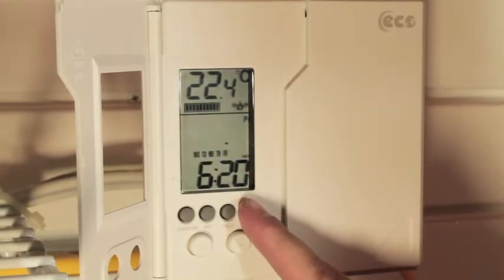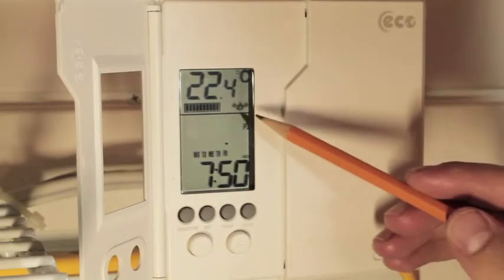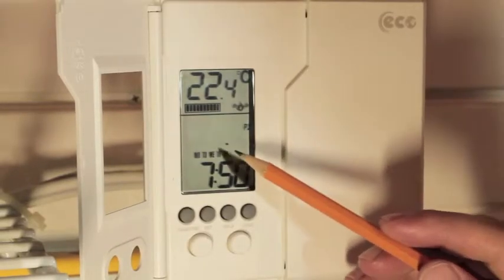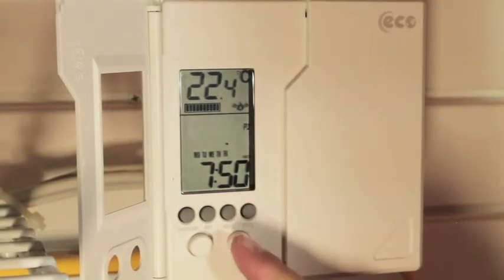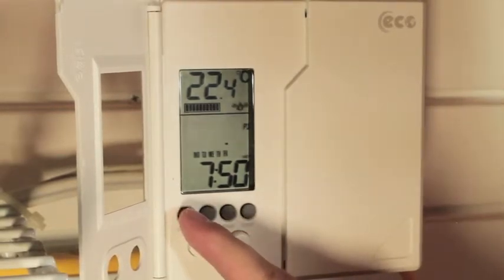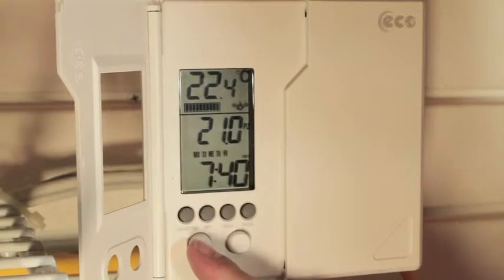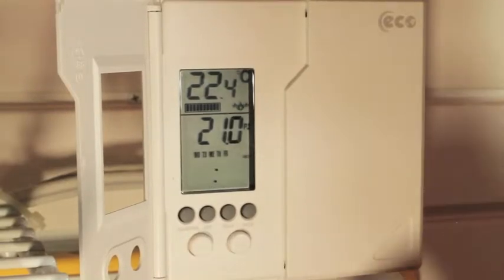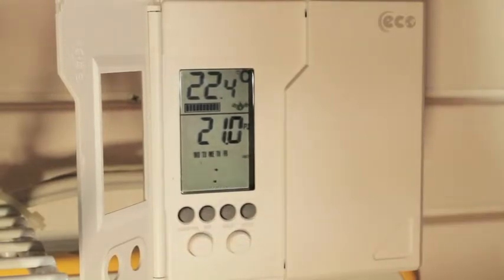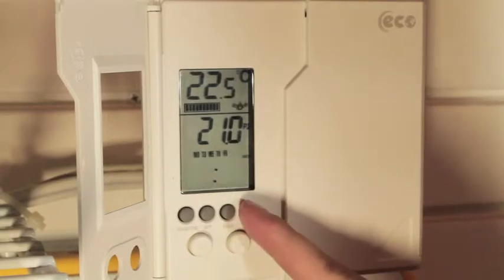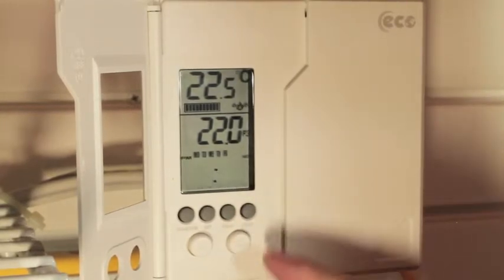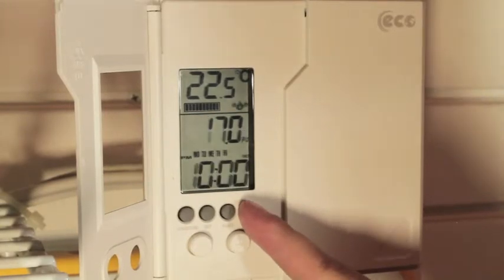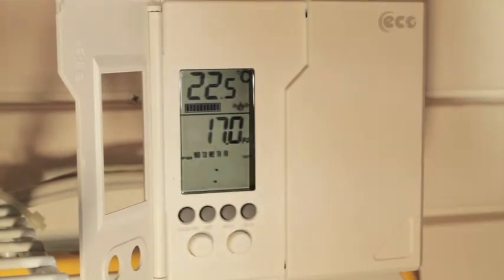To advance to program two, press the PROG button. P2 will now appear on screen as well as all the days of the week. You can adjust the temperature and time the same way you did for program one, switching between them by pressing the usage time button. To advance to program three, press the PROG button again. Once the time and temperatures are set, you can press the PROG button again to advance to program four.